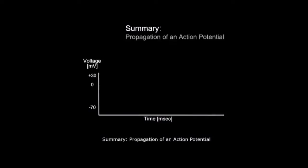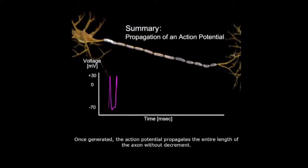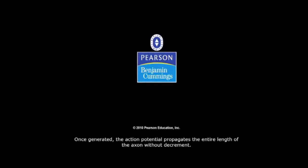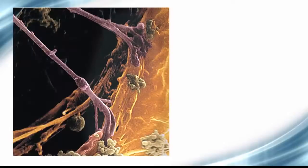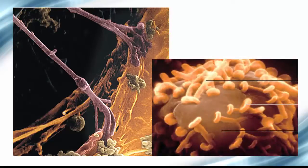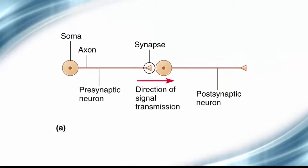Once generated, the action potential propagates the entire length of the axon without decrement. Now let's move on to the synapse. Synapses allow information to transfer from one neuron to the next, and from a neuron to an effector cell. Synapses can come in many different varieties.